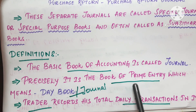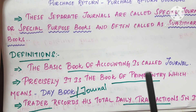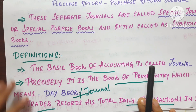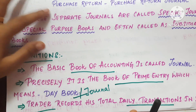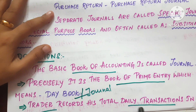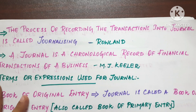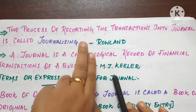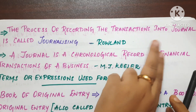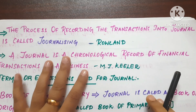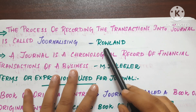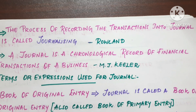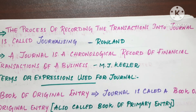The journal is the book of primary entry, which means a day book. Traders record their total daily transactions in it. The process of recording a transaction into the journal is called journalizing.